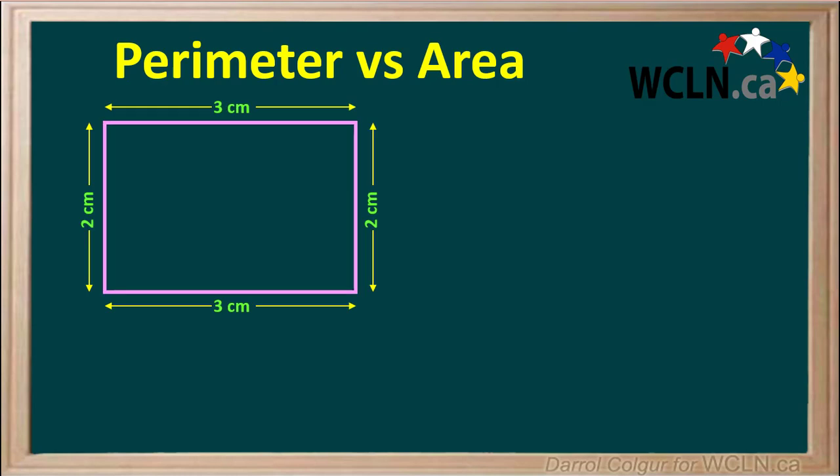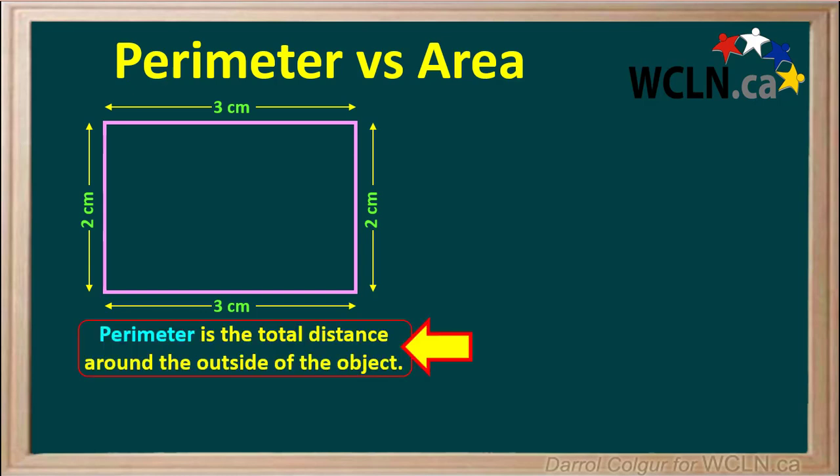Let's look at this rectangle, which has a length of 3 cm and a width of 2 cm. The perimeter of an object is the total distance around the outside of the object.